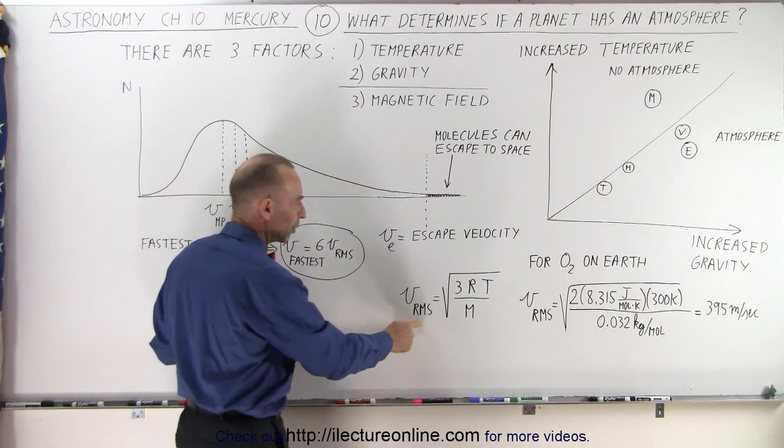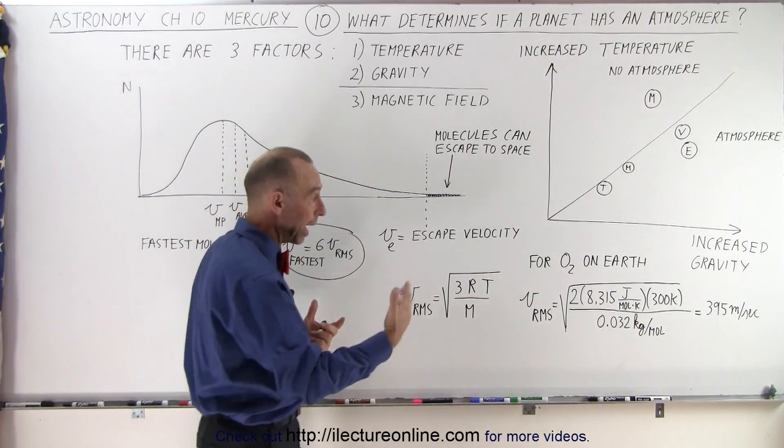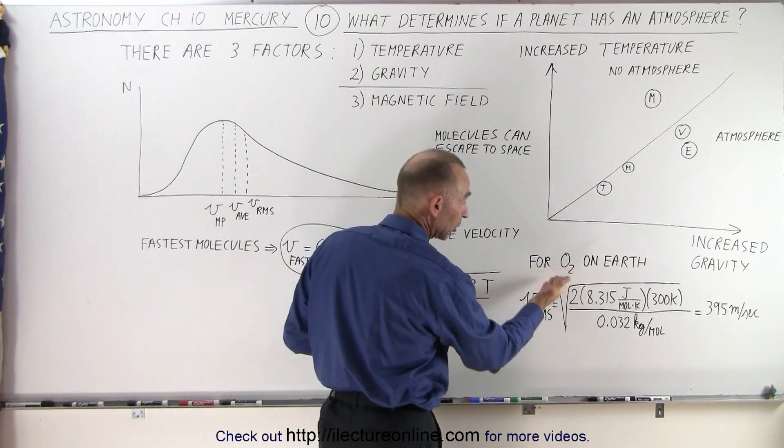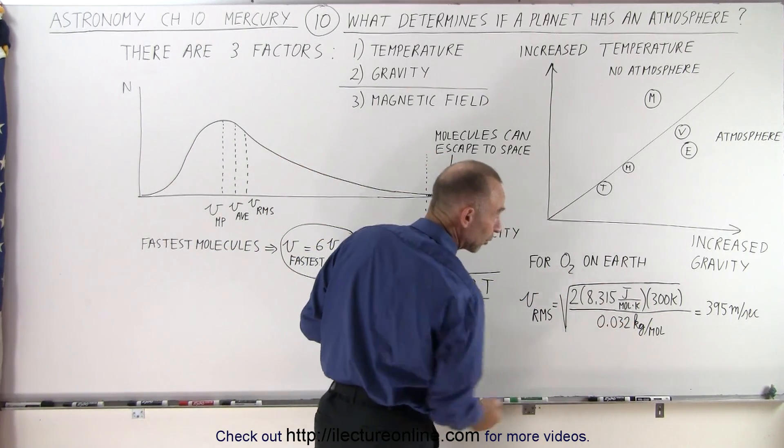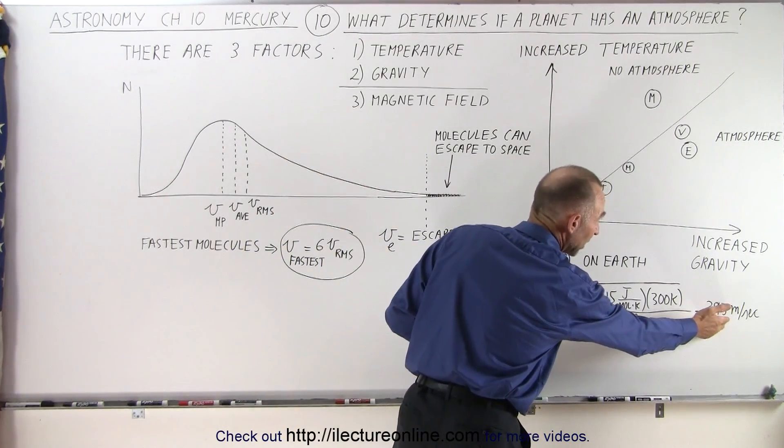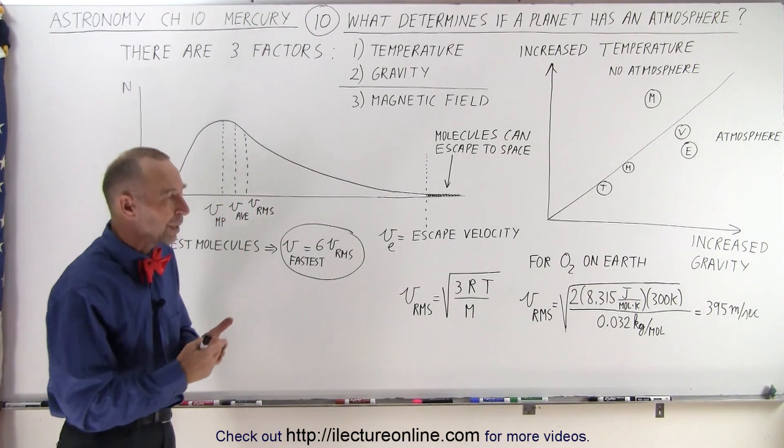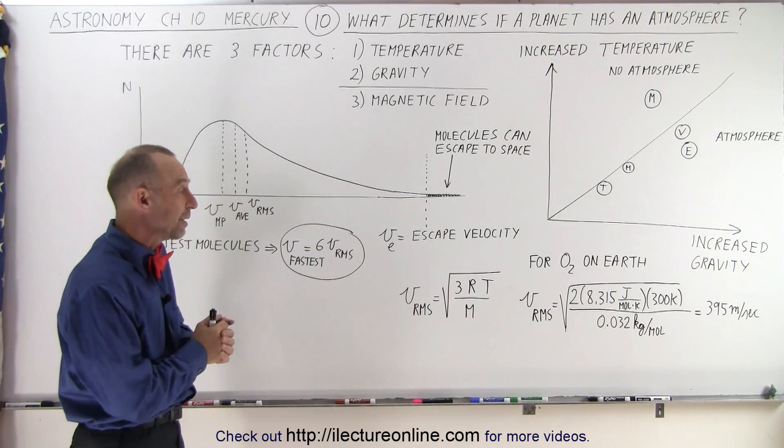We can calculate the root mean square velocity using this equation, and just for an example, on the Earth, with the oxygen molecule, which has a molar mass of 32 grams per mole, we can see that the speed, a typical RMS speed, for the oxygen molecule on the Earth at room temperature is about 395 meters per second.